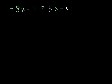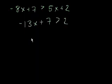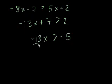Let's say negative 8x plus 7 is greater than 5x plus 2. Let's subtract 5x from both sides. Negative 13x plus 7 is greater than 2. Now we can subtract 7 from both sides. Negative 13x is greater than minus 5.